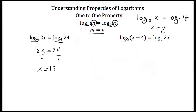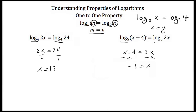Here we have the log base 5 of x minus 4, and that's supposed to be equal to the log base 5 of 2x. Since we're taking the log base 5 of both numbers, both numbers must be equal. So we can say that x minus 4 is equal to 2x. Subtract x from both sides, and we get x is equal to negative 4. That's how you use the one-to-one property to solve two logs that have the same base.